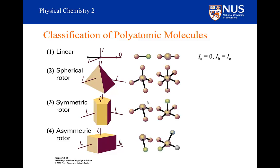Why is A chosen to lie along the internuclear axis? By convention, the axis with the smallest moment of inertia is labeled the A axis. So the A axis has the smallest moment of inertia, the B axis has the next smallest, and the C axis has the largest moment of inertia. A, B, C — from the smallest to the largest moment of inertia — that is how we classify it.